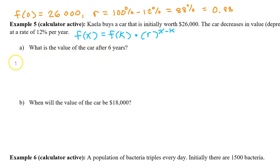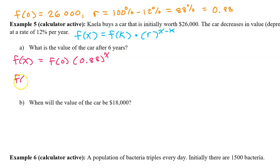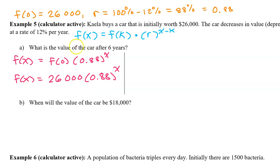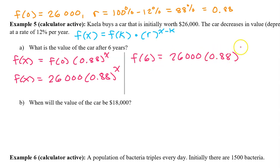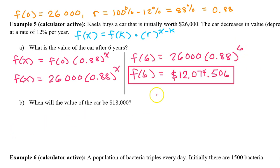Now we can write an exponential function for the value of Kayla's car. f(x) is equal to f(0) times r, which is 0.88, to the x minus k power. But that's going to be x minus 0, which is just x. f(0) was 26,000, so f(x) = 26,000 times 0.88 to the x power. We can use this to find the value of the car after 6 years: f(6) = 26,000 times 0.88 to the 6th power. After 6 years, Kayla's car will be worth $12,074.506.